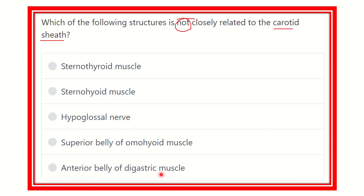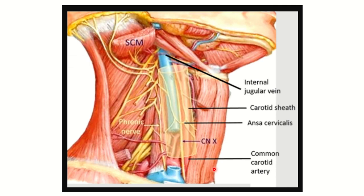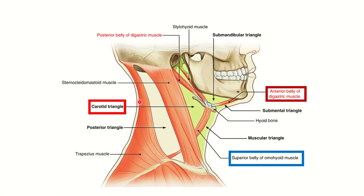Let's look at the carotid sheath first. Here we can see the carotid sheath — a tunnel-like structure. It contains the major vessels: the internal jugular vein, internal carotid artery, common carotid artery, and vagus nerve. We can also see some structures located very close to it, including the ansa cervicalis.